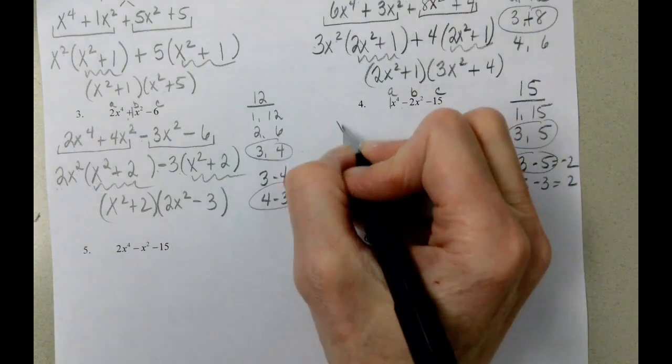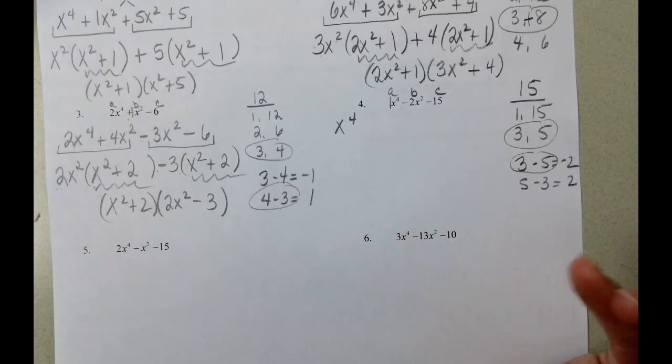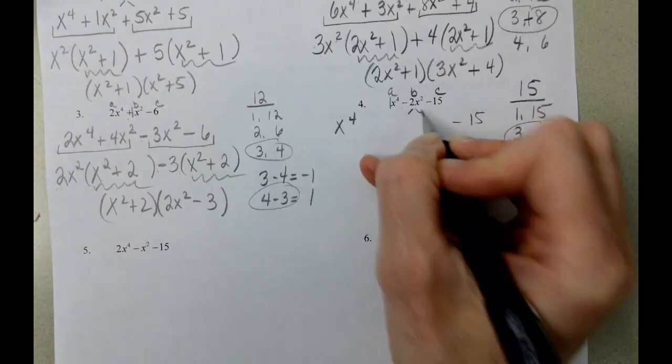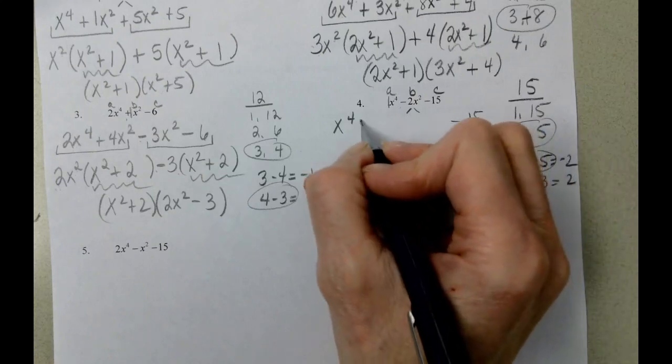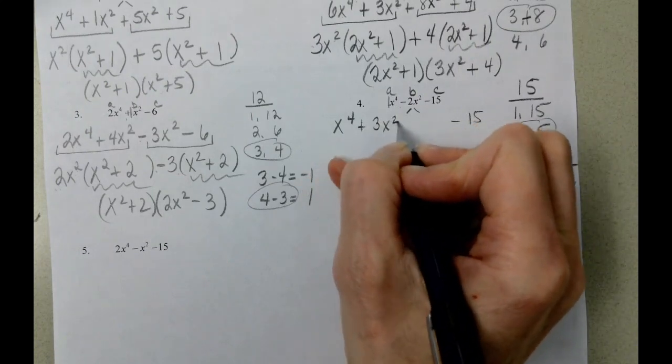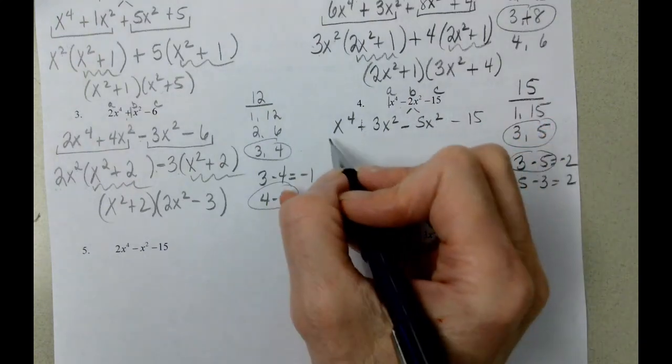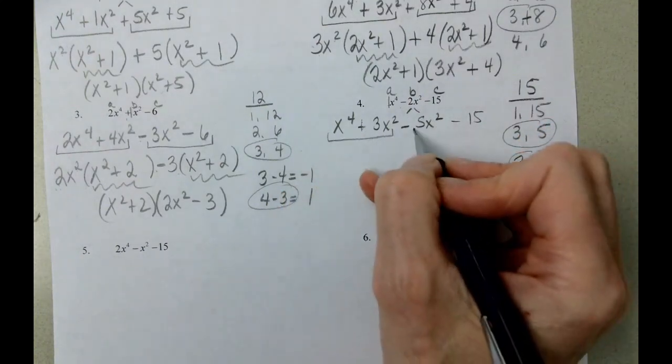Filling back in. It's going to be x to the 4th. And then it's going to be the minus 15. When we split the middle, it's going to be plus 3x squared minus 5x squared. And here's a group. And here's a group.